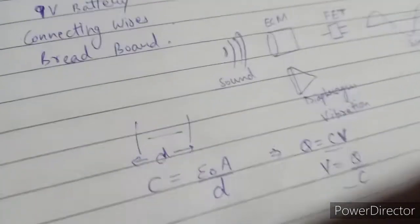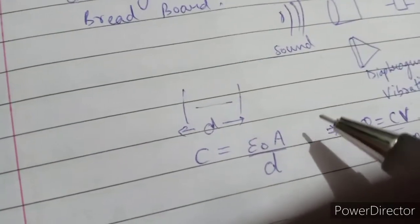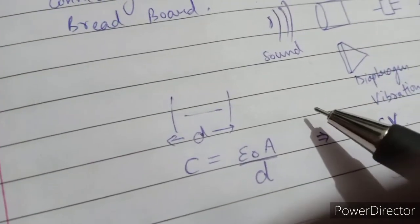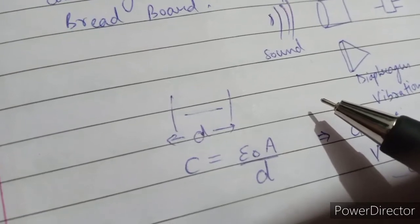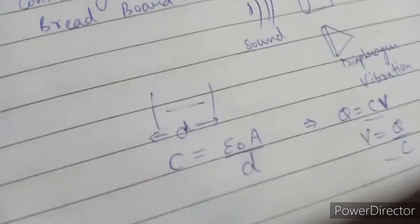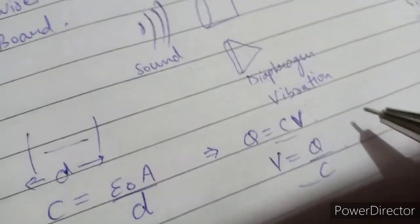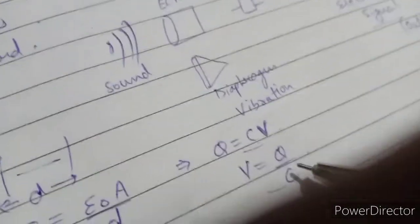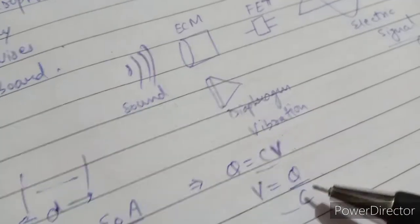When the sound travels, the distance between the capacitor plates decreases and then increases when we stop vibrating that film. Due to this, capacitance varies. Through this formula we can see that there is a change in potential difference.